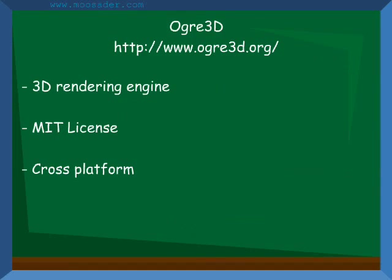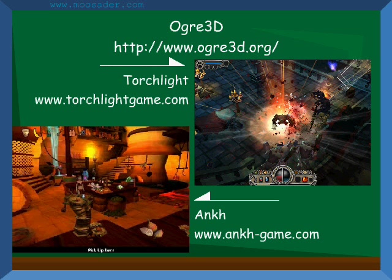Ogre3D is a 3D rendering engine using the MIT license. It is cross-platform and takes care of rendering as well as scene management. Some games made with it are Torchlight and Ankh.